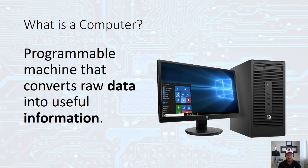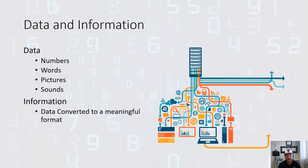So what is a computer? A computer is a programmable machine that converts raw data into useful information. Data and information are bolded because I want to explain what that actually means—programmable machines that convert raw data.